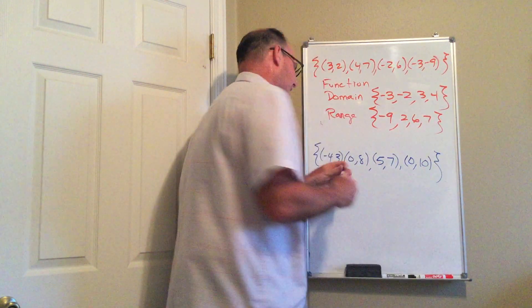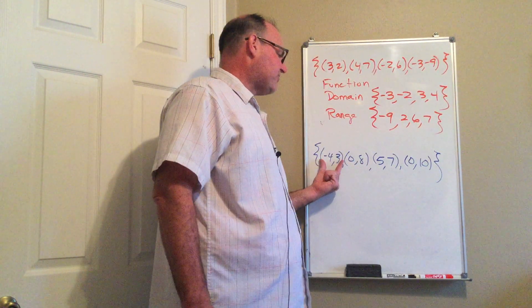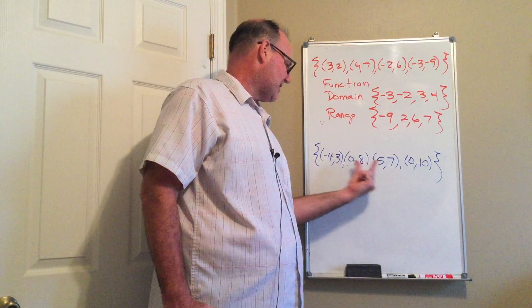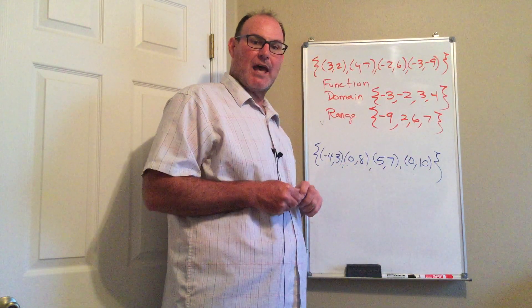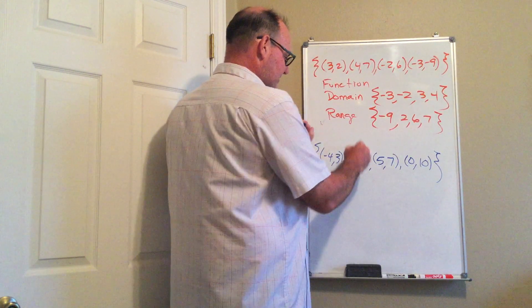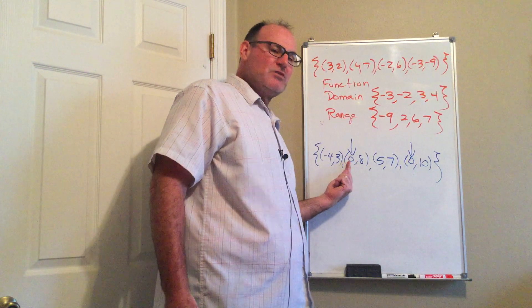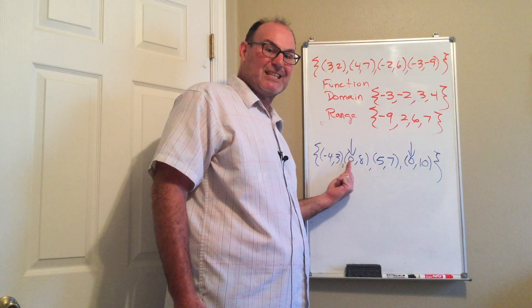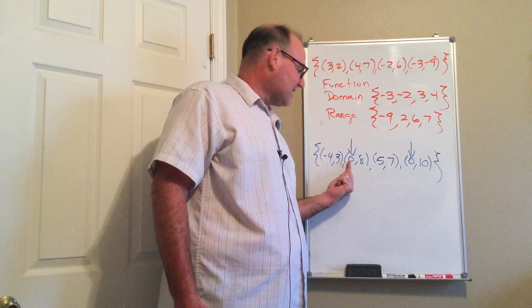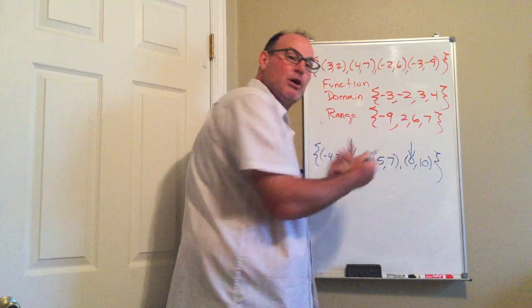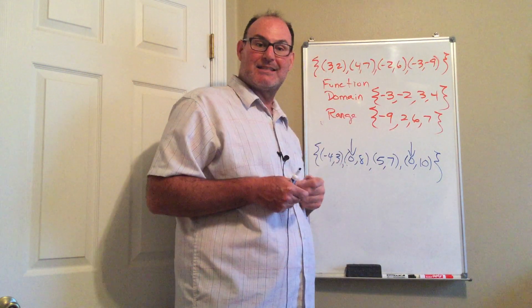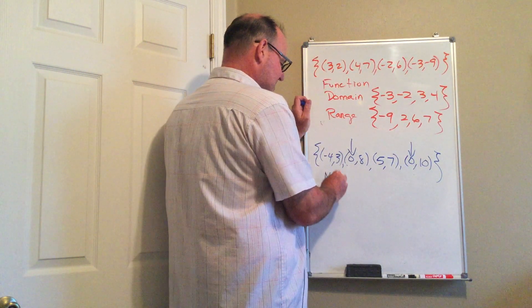Here's my second example. I've got the set of ordered pairs (-4, 3), (0, 8), (5, 7), (0, 10). Notice, the x value 0 occurs two times. That means the x value 0 does not correspond to exactly one y value. The x value 0 corresponds to two y values. That violates the definition of a function. This is not a function.